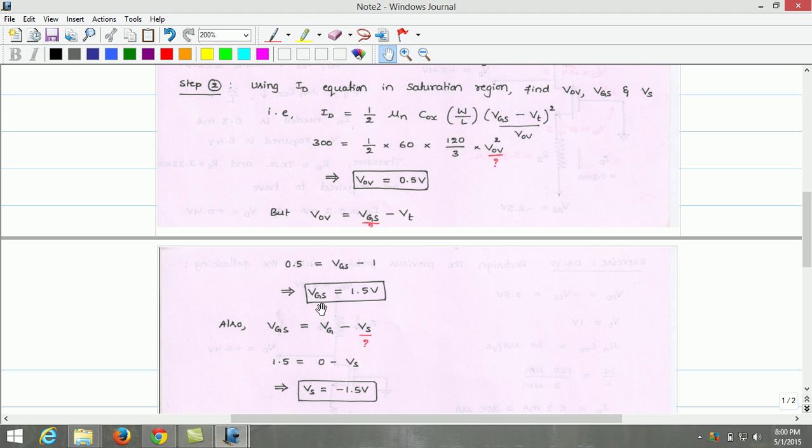Once we know gate source voltage, we can estimate the source voltage using this equation: Vgs equals Vg minus Vs. Substituting Vgs and Vg, the source voltage is found to be minus 1.5V.